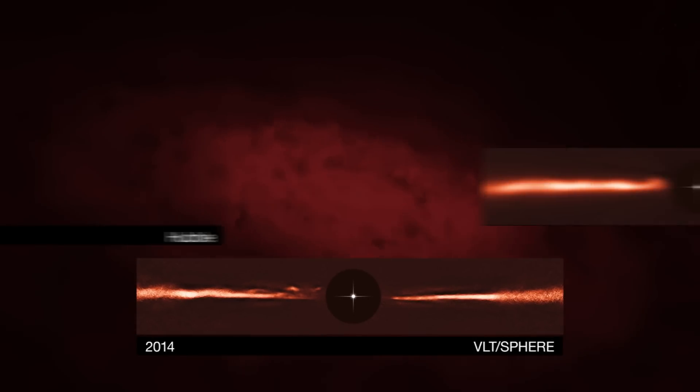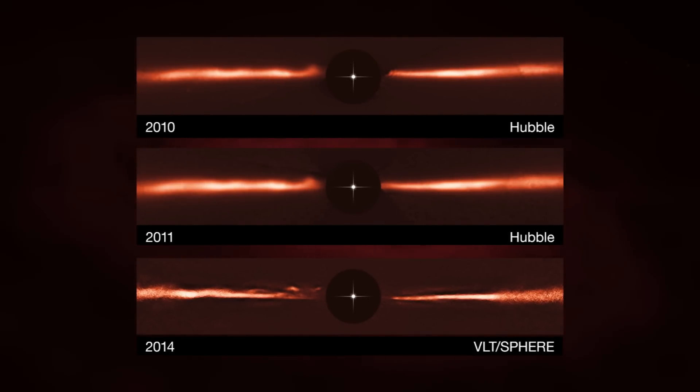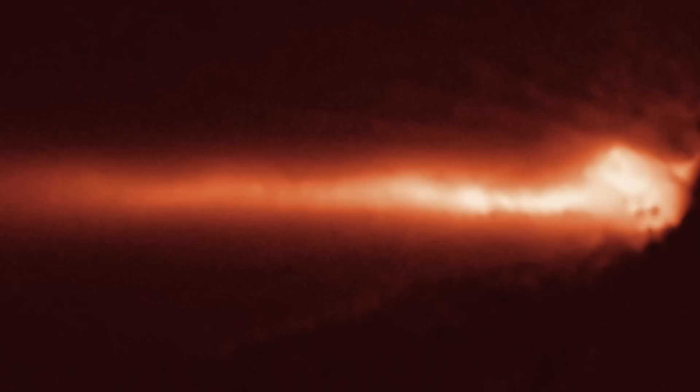The astronomers compared the SPHERE data with images of the disk taken by Hubble in 2010 and 2011. The comparison showed that these ripples were moving, and moving very fast.